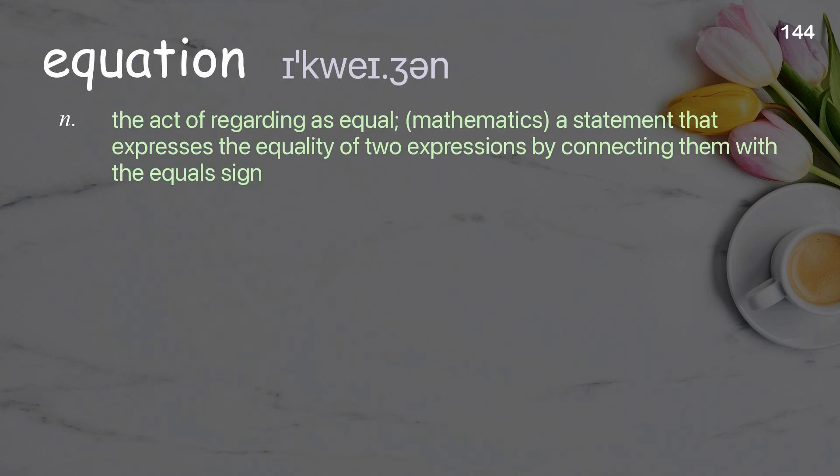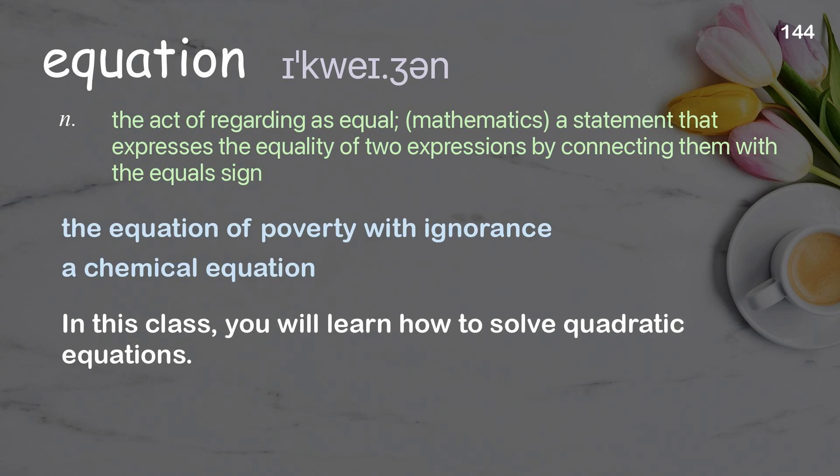Equation: The act of regarding as equal; in mathematics, a statement that expresses the equality of two expressions by connecting them with the equal sign. Examples: the equation of poverty with ignorance, a chemical equation. In this class, you will learn how to solve quadratic equations.